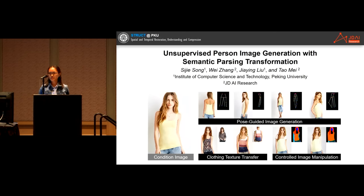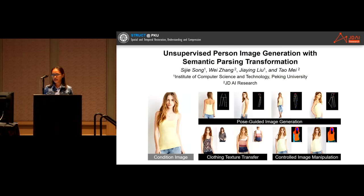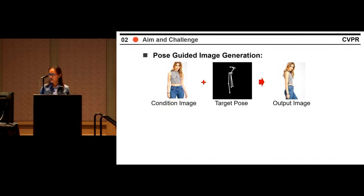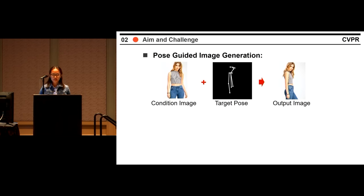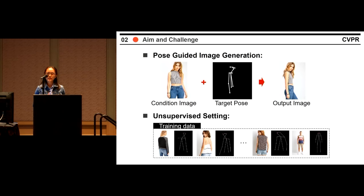I'm Sujia Song from Peking University. I'm glad to present our work, Unsupervised Person Image Generation with Semantic Parsing Transformation. It's a joint work with Peking University and JD AI Research. Our model can not only achieve pose-guided image generation, but is also generalizable to other tasks including clothing texture transfer and controlled image manipulation. We tackle the problem in the unsupervised setting — we don't need ground truth images paired with target poses. Any single image can be our training data, though this brings many challenges in learning the mapping function.